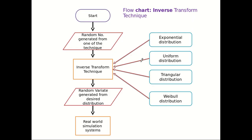Let us understand how random variates are generated using the inverse transform technique. Here we consider random numbers which are uniformly distributed between 0 and 1, obtained through random number generation schemes. Those random numbers are transformed using the inverse transform technique with the support of different distributions, and the desired random variates are generated. Those random variates are then used for real-world simulation systems.